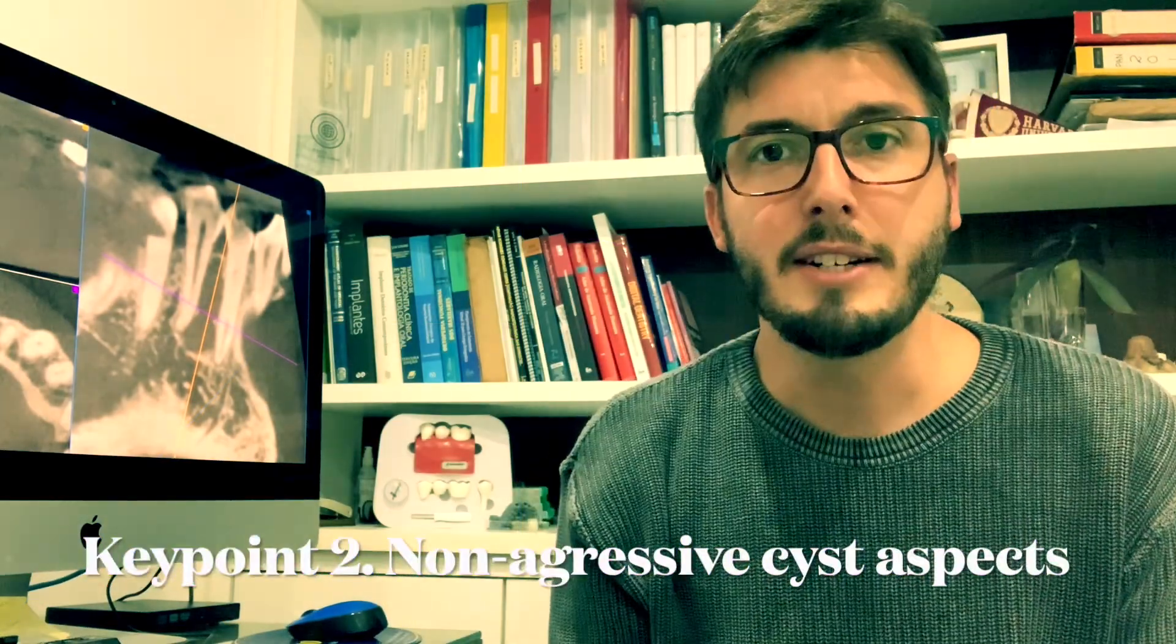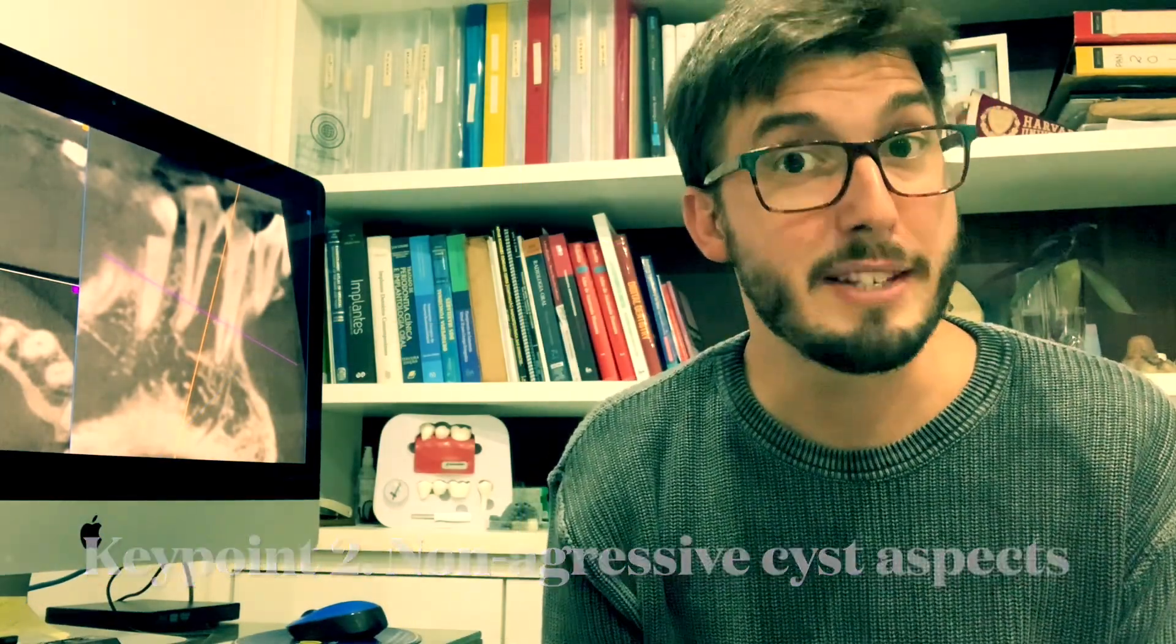The second key point is that we have the cyst aspects. And it turns out that the cyst is not so aggressive. So we have a well-limited radiolucent or hypodense if we are talking about CBCT lesion which usually extends from the alveolar crest downwards to the periapical area between the two teeth involved.